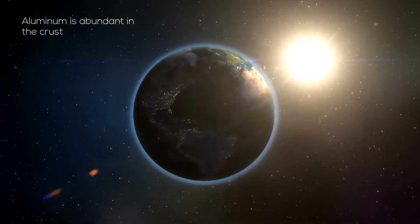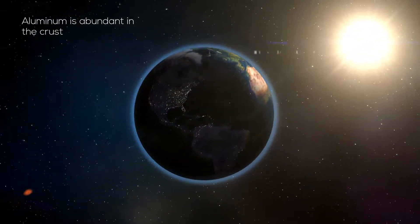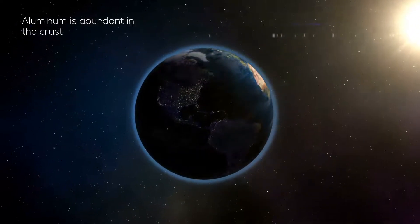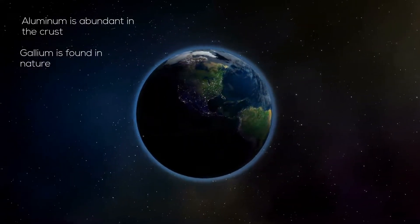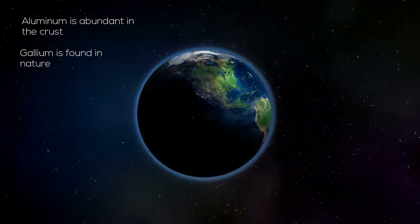Aluminum is a popular element of the Boron Group and is found in the Earth's crust. Gallium is found in nature and is fairly abundant in the Earth's crust.